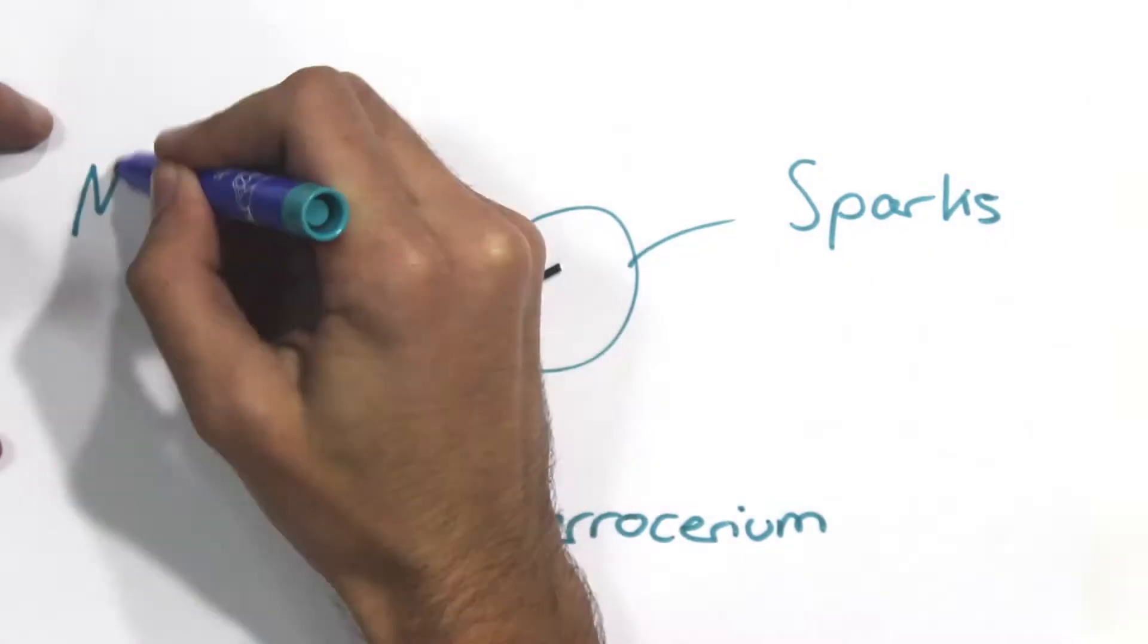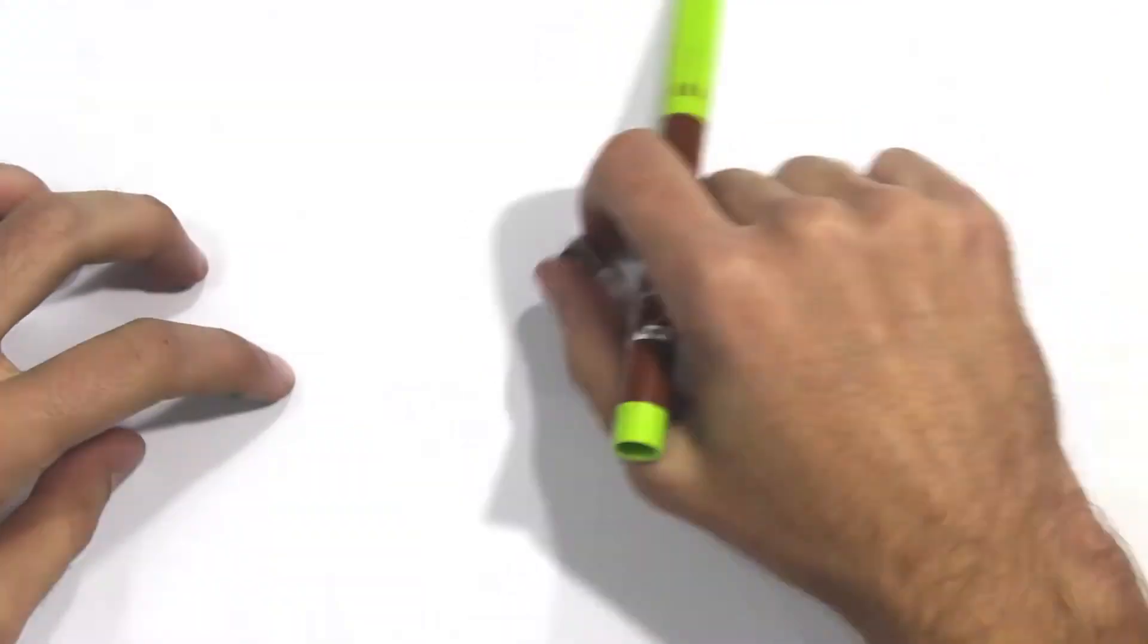The flint. The flint supplies material for the sparks. It is made out of a material known as ferrocerium.